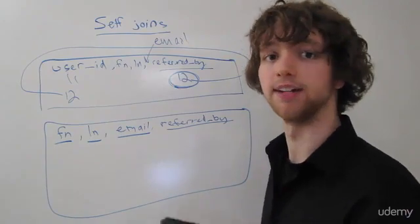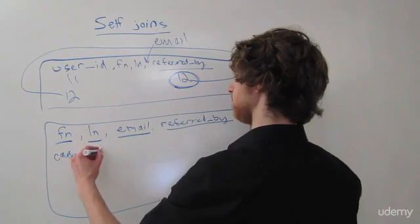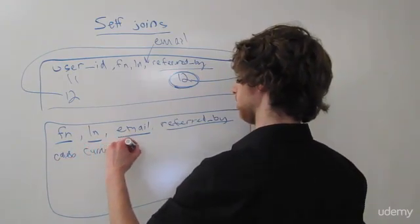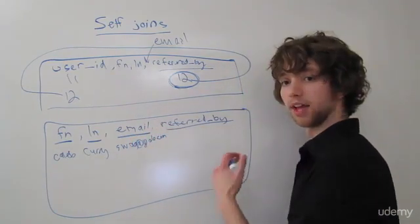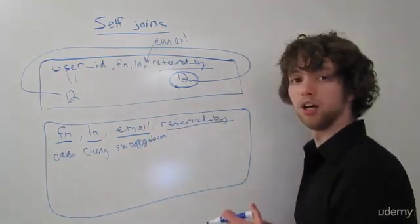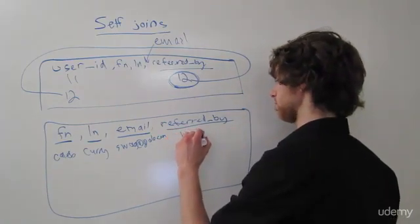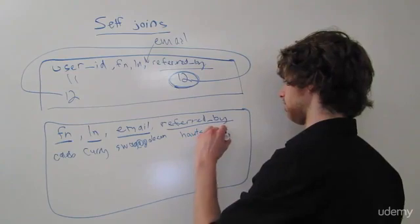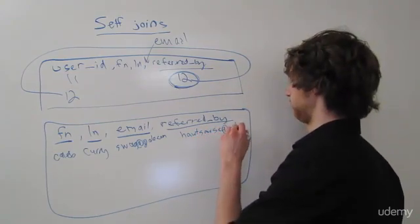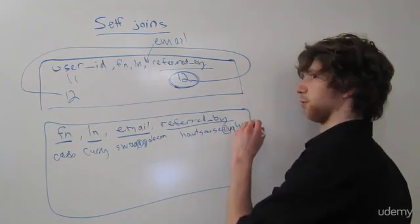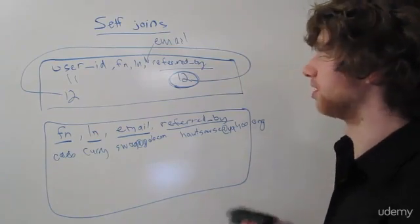We're going to insert data into that table. So we might have a user such as Caleb Curry, and his email is going to be swag at yolo.com. And then the referred by — we're going to replace that number with a user's email, such as hotsauce at yahoo.org. That's just an example of what we can do with this self-join.